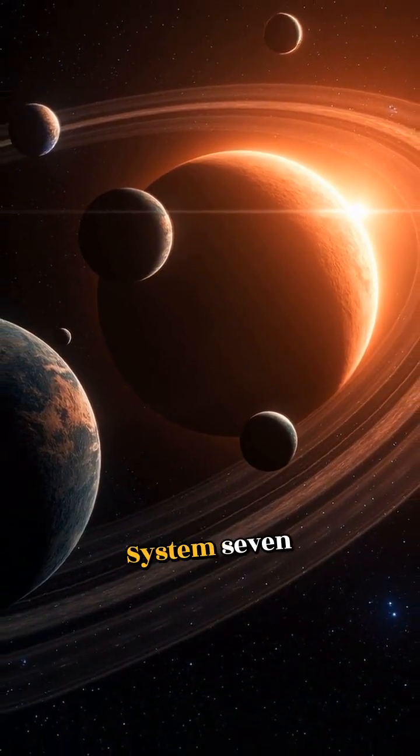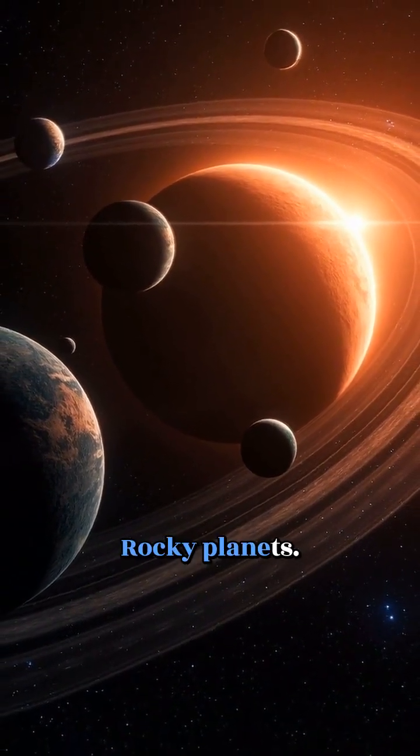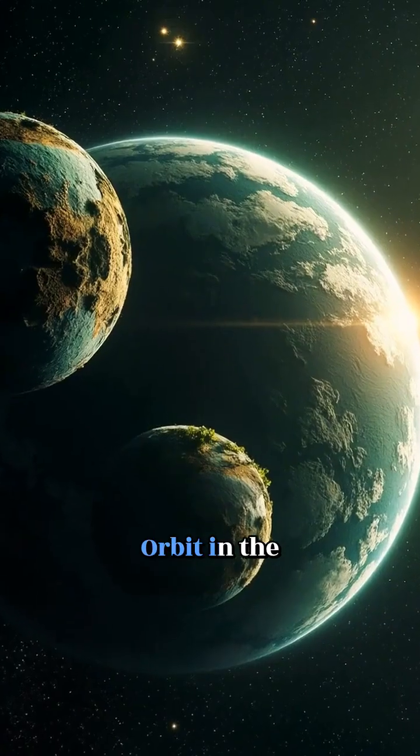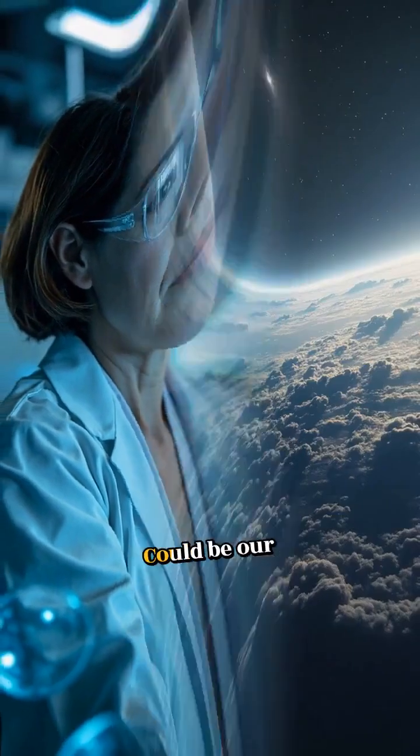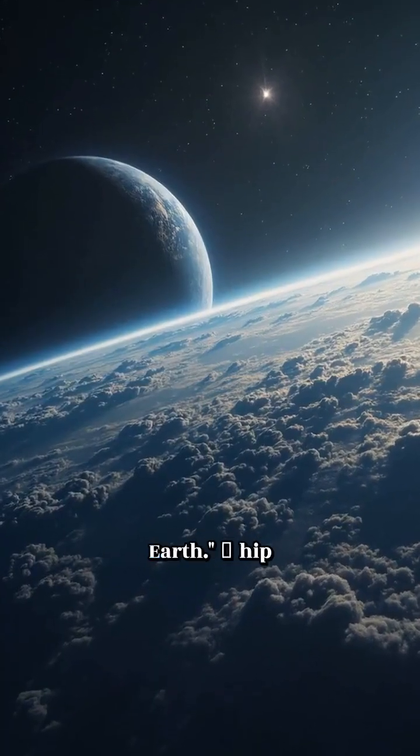The TRAPPIST-1 system. Seven rocky planets. Three of them orbit in the habitable zone. Webb is studying their atmospheres. One of them could be our first true second Earth.